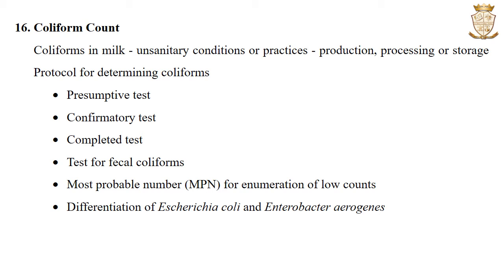The coliform count: coliforms are aerobic or facultatively anaerobic, gram-negative, non-spore-forming rods capable of fermenting lactose with the production of acid and gas. They can grow in the presence of bile salts and are present in the intestinal tract of warm-blooded animals. Their presence in milk indicates unsanitary conditions during production, processing, or storage. The protocol for determining coliforms includes: presumptive test, confirmatory test, completed test, test for fecal coliforms, most probable number for enumeration, and differentiation of Escherichia coli and Enterobacter aerogenes.